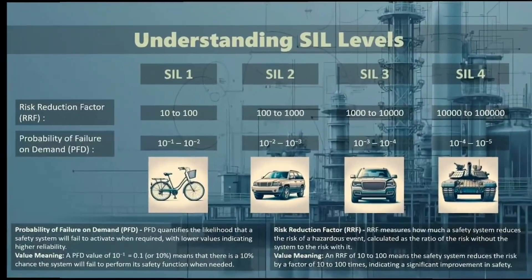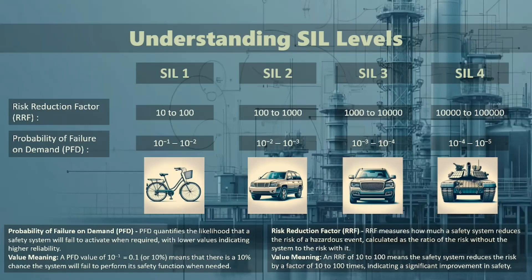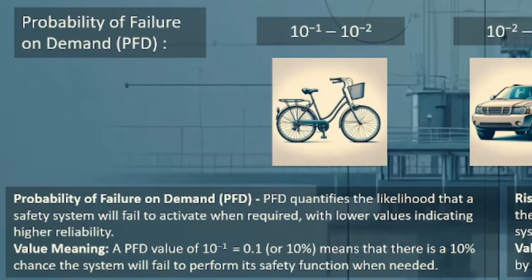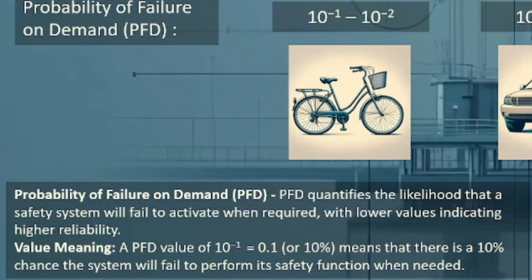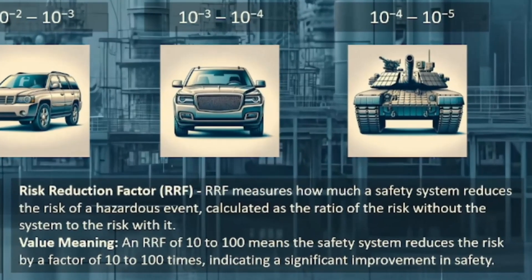Let's break down the SIL levels. Each level represents a range of risk reduction in probability of failure on demand, or PFD. Probability of failure on demand quantifies the likelihood that a safety system will fail to activate when required, with lower values indicating higher reliability. A PFD value of 0.1, or 10%, means there is a 10% chance the system will fail to perform its safety function when needed. Risk reduction factor, or RRF, measures how much a safety system reduces the risk of a hazardous event, calculated as the ratio of the risk without the system to the risk with it. An RRF of 10 to 100 means the safety system reduces the risk by a factor of 10 to 100 times, indicating a significant improvement in safety.